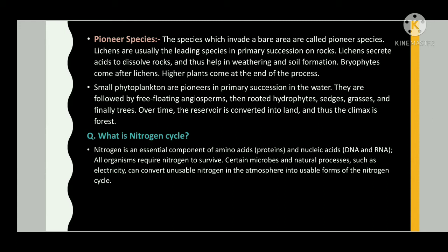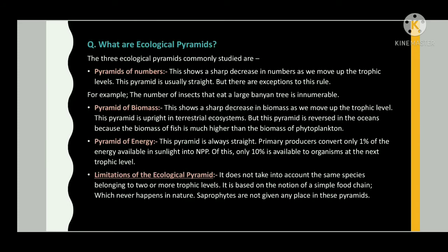What is the nitrogen cycle? Nitrogen is an essential component of amino acids, proteins, and nucleic acids (DNA or RNA). All organisms require nitrogen to survive. Certain microbes and natural processes such as lightning can convert unusable nitrogen in the atmosphere into usable forms through the nitrogen cycle.